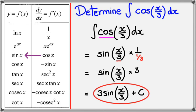I should end up with what I originally started with. 3 sine x over 3, when I differentiate it, I would get cos x over 3. Just a quick way to check.